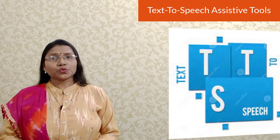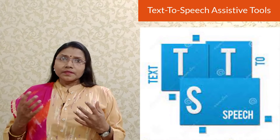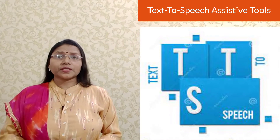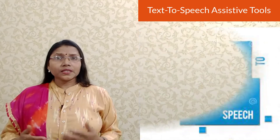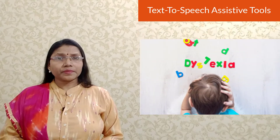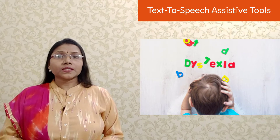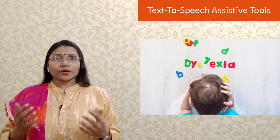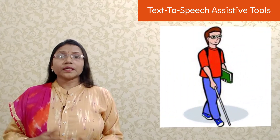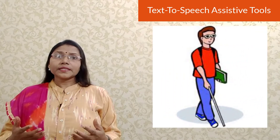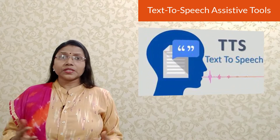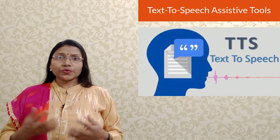Next is text-to-speech assistive tools. Text-to-speech software is designed to help children who have difficulties reading standard print. Common print disabilities can include blindness, dyslexia, or any type of visual impairment, learning disability, or other physical condition that impedes the ability to read.